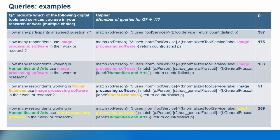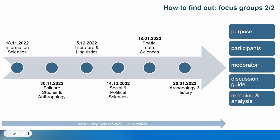The second method was focus groups. We conducted six focus groups from mid-November 2022 until the end of January 2023, coinciding with the period when the questionnaire was open. The goal was to gather feedback, opinions, and perceptions from selected individuals and identify digital methods used throughout the research data life cycle. Participants came from information sciences, folklore studies and anthropology, literature and linguistics, social and political sciences, spatial data sciences, and archaeology and history. Each group had six to ten participants with a balanced gender ratio.